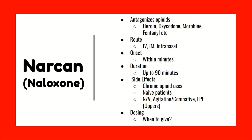What if you are giving Narcan to a chronic opioid user? Giving a very large amount will send them into opioid withdrawal, as the body has gotten used to having opioids on board. Symptoms will include nausea, vomiting, agitation, combativeness, and even tachycardia. Opioids are a downer — when they withdraw, it's going to be all the upper symptoms like tachycardia and agitation. There's also a risk of flash pulmonary edema. It's a very low risk and not common, but it can happen, so keep that in the back of your mind.